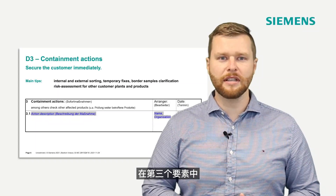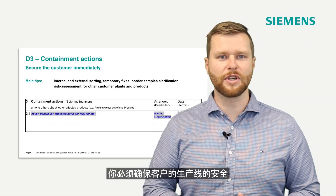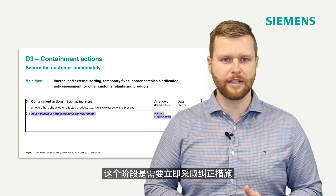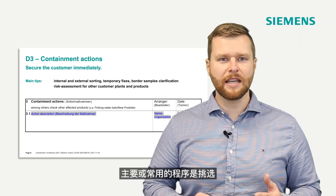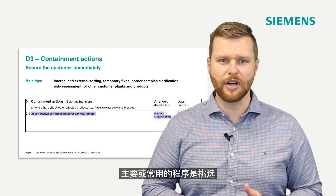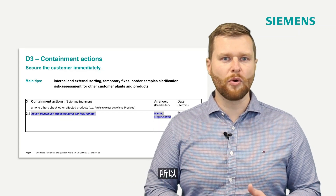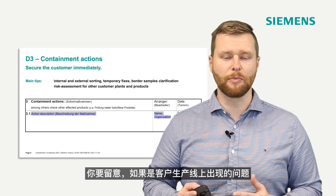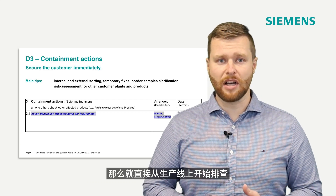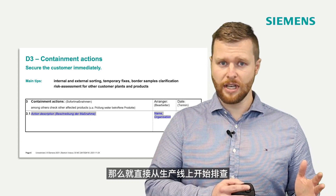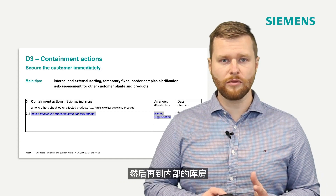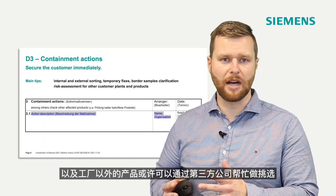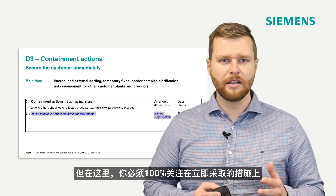In discipline number three, you have to secure the production line of the customer. This is the space for immediate containment actions. The most common procedure is sorting — keep in mind that your customer, in case of some problems on the production line, directly starts with sorting from the production line, then to the internal warehouse, and then maybe uses an external company to sort the parts also outside the plant.